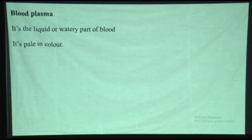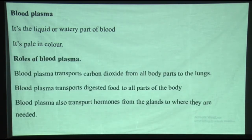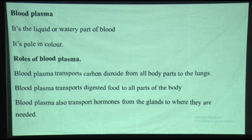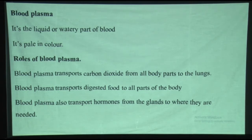The next component is blood plasma. Blood plasma is simply the liquid part of blood, or the watery part of blood — it is pale in color. Blood plasma transports carbon dioxide from all body parts to the lungs. It can also transfer waste products. Blood plasma transports digested food to all parts of the body. Plasma also transports hormones from the glands to where they are needed. Note that oxygen is not transported by plasma — oxygen is transported by red blood cells.